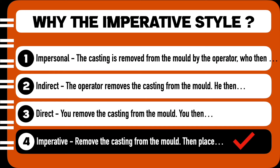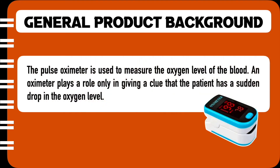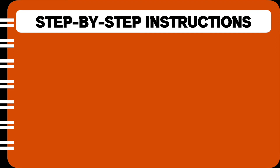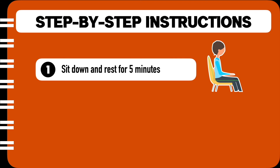Now that we have a fair idea on how to frame good user instructions, let me walk you through an example. I have taken up the example of an oximeter, as this is the product used in earlier videos. I will start with the general product background: the pulse oximeter is used to measure the oxygen level of the blood. An oximeter plays a role in giving a clue that the patient has a sudden drop in oxygen level. The step-by-step instructions are short, numbered, in the imperative, and accompanied by an image.